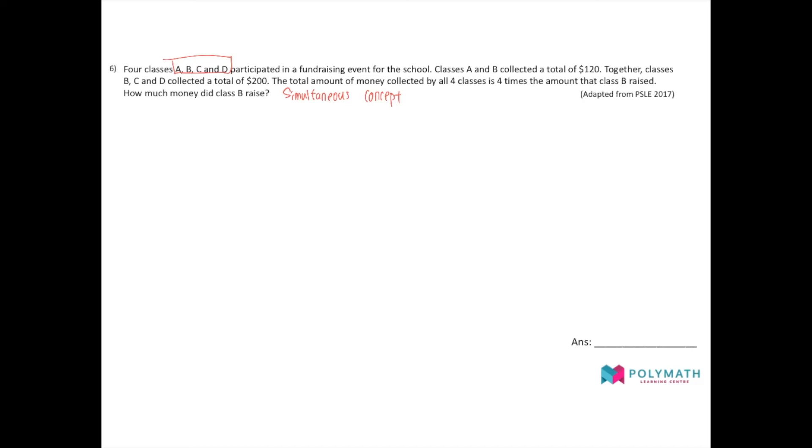So classes A and B collected a total of $120. When you are given a clue like this, write it down in an equation. A plus B gives you $120.